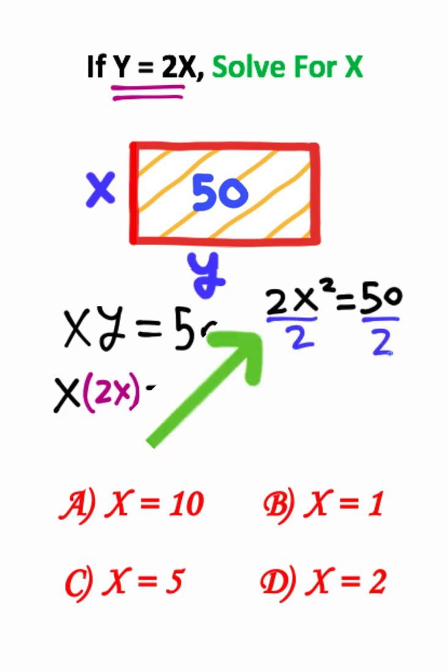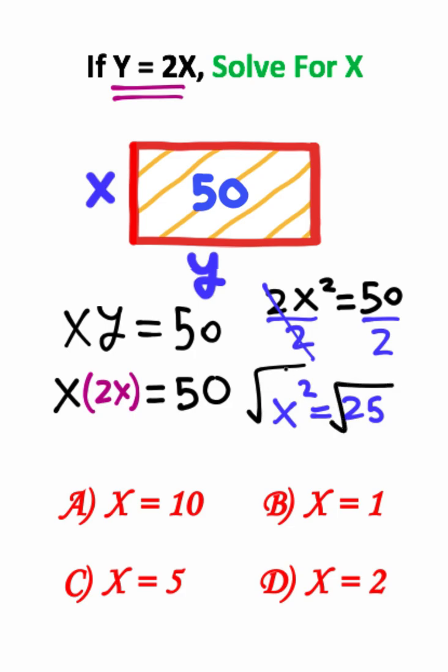I can divide both sides by 2 to get the 2's to cancel on the left, which gives us x² = 50 divided by 2, which is 25. So all I need to do now is square root both sides of this equation. That gives me x by itself, and the square root of 25, if we ignore the negative value, is simply 5.